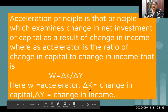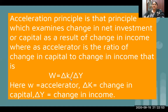Delta represents change. Delta K means change in capital, delta Y means change in income. So W equals delta K upon delta Y — that is, the change in net investment that occurs is all due to the change in delta Y.